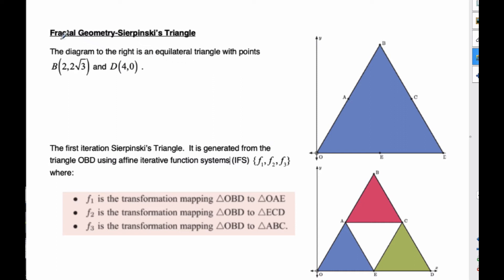Okay, Mr. Rops here, and we're going to briefly touch on fractal geometry, and probably one of the most famous fractals that we have is Sierpinski's triangle. So I've chosen a Sierpinski's triangle here. I've made B be the point (2, 2√3) and D(4, 0) just to have a starting point of some kind.